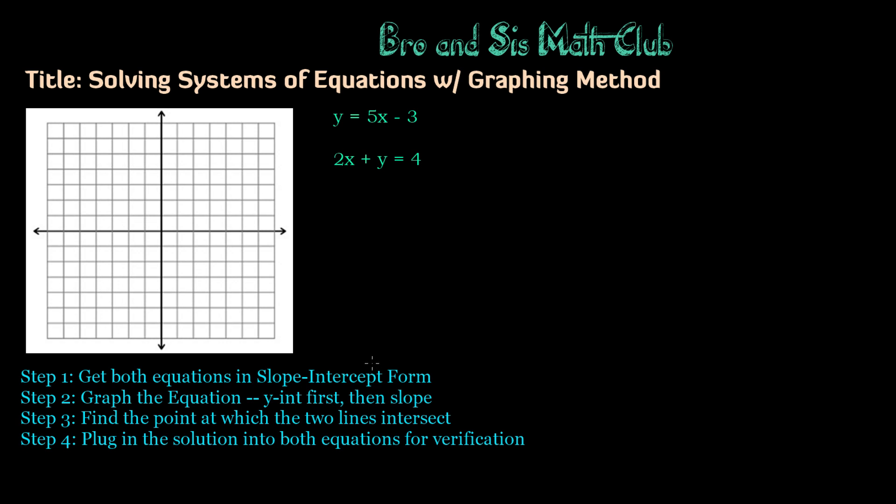The very first step is to get both of the equations in slope-intercept form. The slope-intercept form of any linear equation or function is y equals mx plus b. In this equation, the m stands for the slope, and the b stands for the y-intercept.